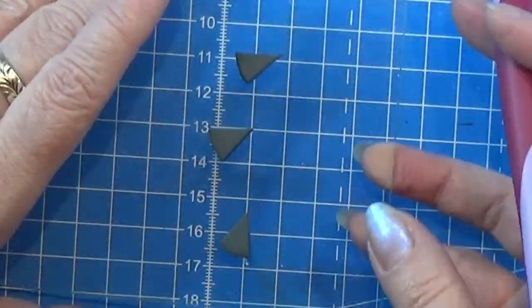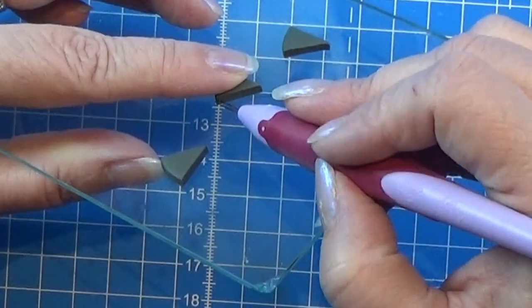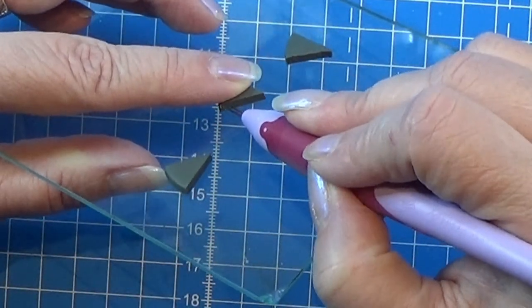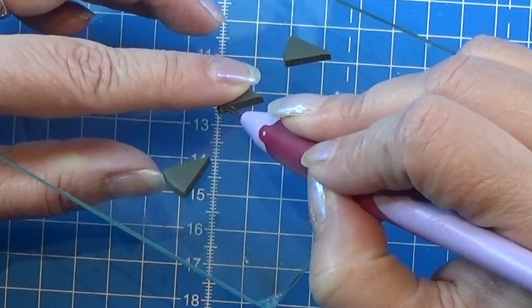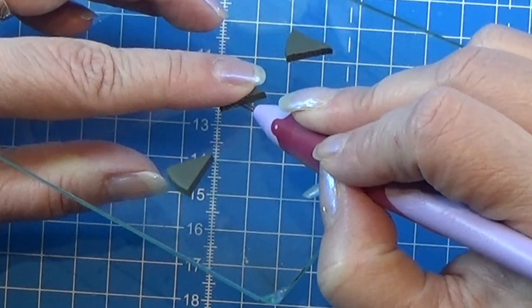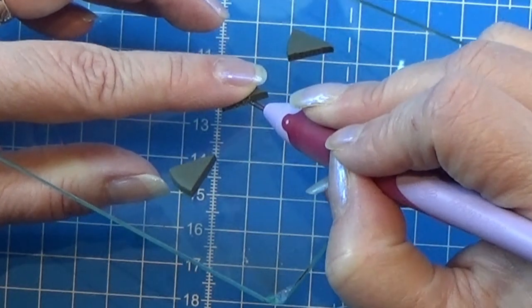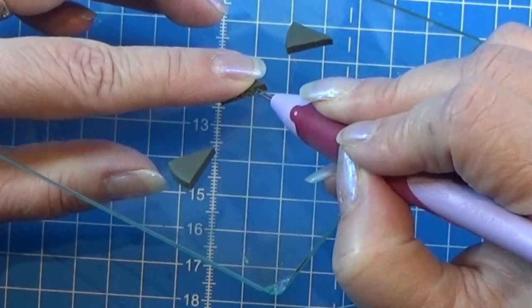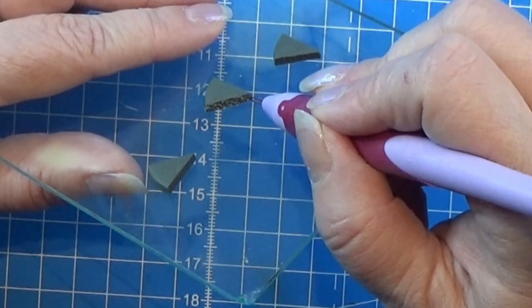On the second one I am using a needle tool. This one has two needles on it and I'm scratching up all the sides here of the cake. And the last one I am just going to leave just like it is.